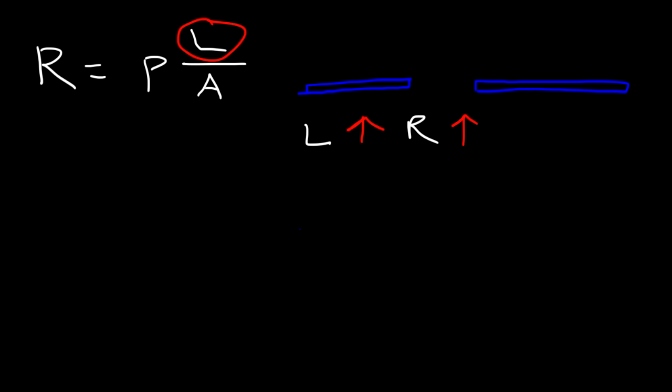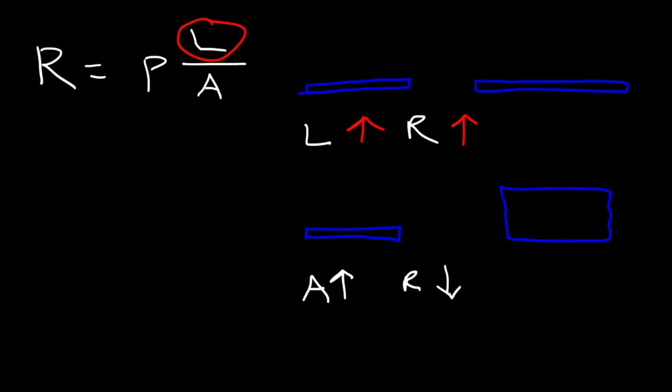Which wire has more resistance — a thin wire or a thick wire, assuming they have the same length? It turns out that the thin wire has more resistance than the thick wire. Looking at the equation, area is in the denominator. As you increase the cross-sectional area of a wire, the resistance will decrease, because increasing the denominator decreases the value of the fraction.